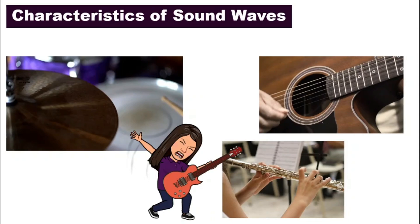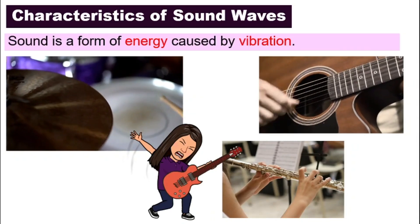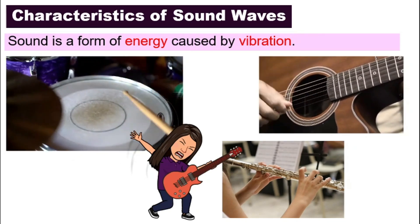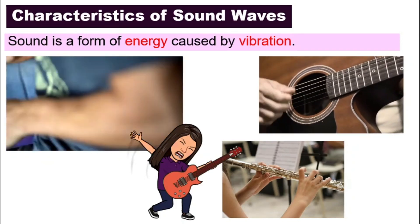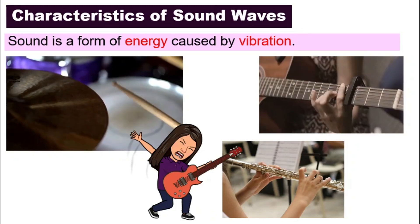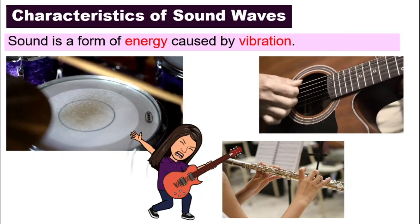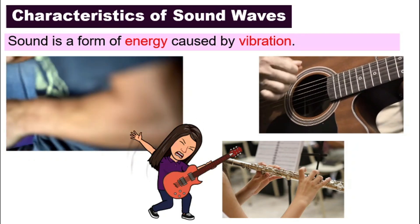So before we look at the characteristics of sound waves, what is a sound? Sound is a form of energy, just like in chapter 9 where heat is a form of energy. Sound is also a form of energy and it is caused or produced by vibration. Every sound that you hear, something has vibrated. The vibration is what produced the sound.